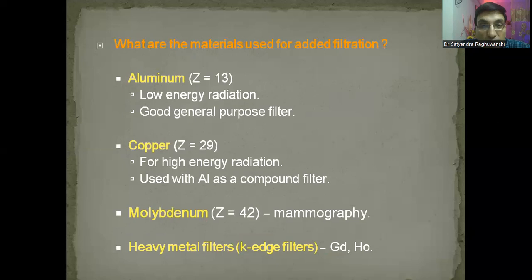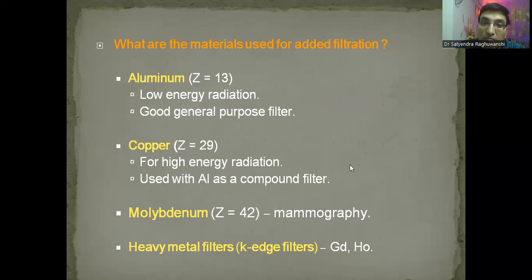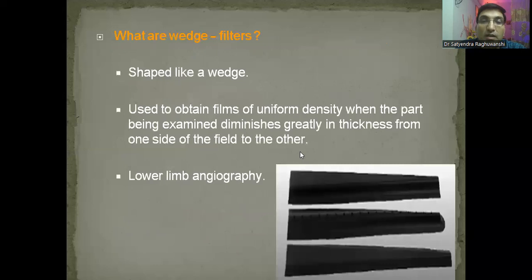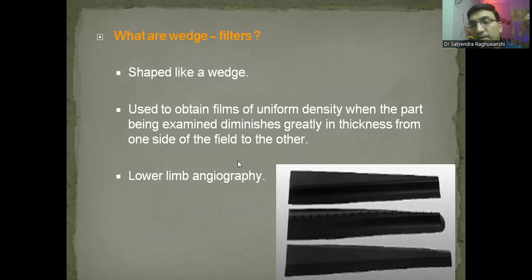Heavy metal filters include gadolinium, holmium, etc. — names are enough, not required in detail. What are wedge filters? These are thicker on one side and thinner on the other side. These are used to obtain films of uniform density when a non-uniform body part is being examined, for example in lower limb angiography. Let's take a break: try to identify the highest Olympic gold medal winner — Michael Phelps, with 23 gold medals and 28 Olympic medals total. I've shown this picture to illustrate that if you focus on exactly what you want, you can achieve your results.